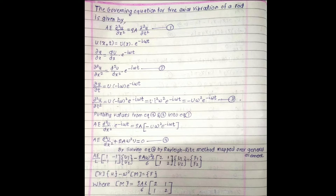I will call this equation number one. Here I will separate the two variables x and t. So I will write down the function u as a function of x and t, given by U(x) · e^(−iωt), which is a function of t.